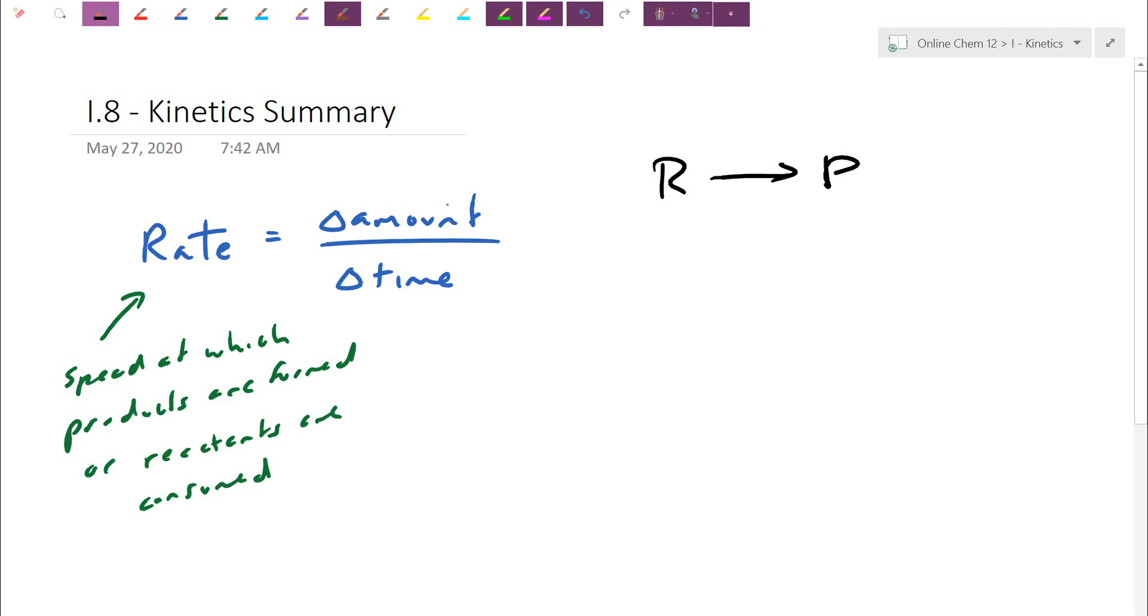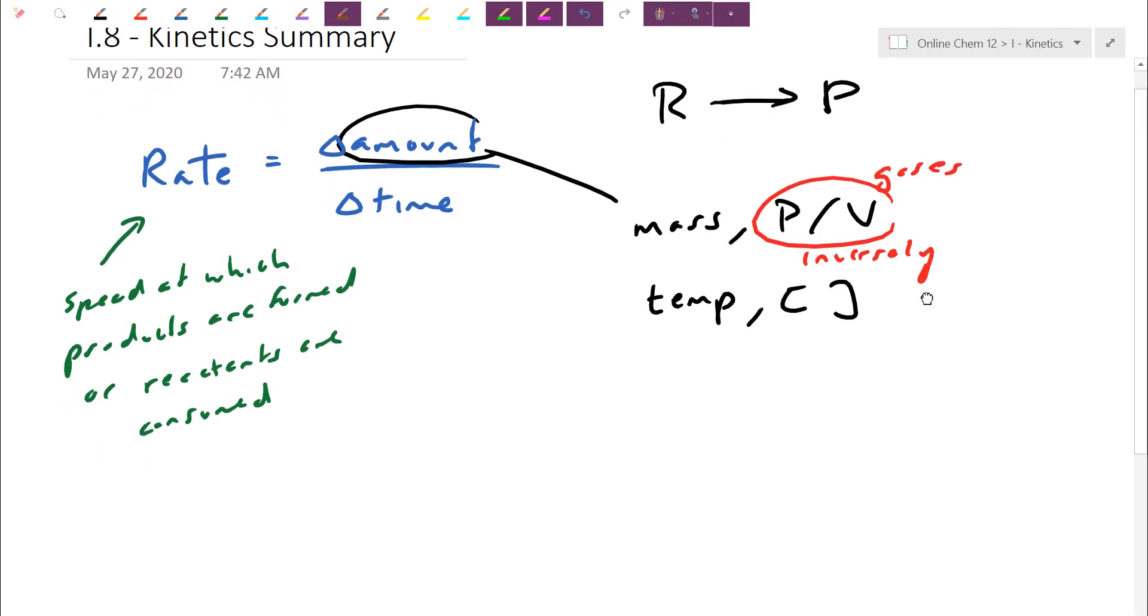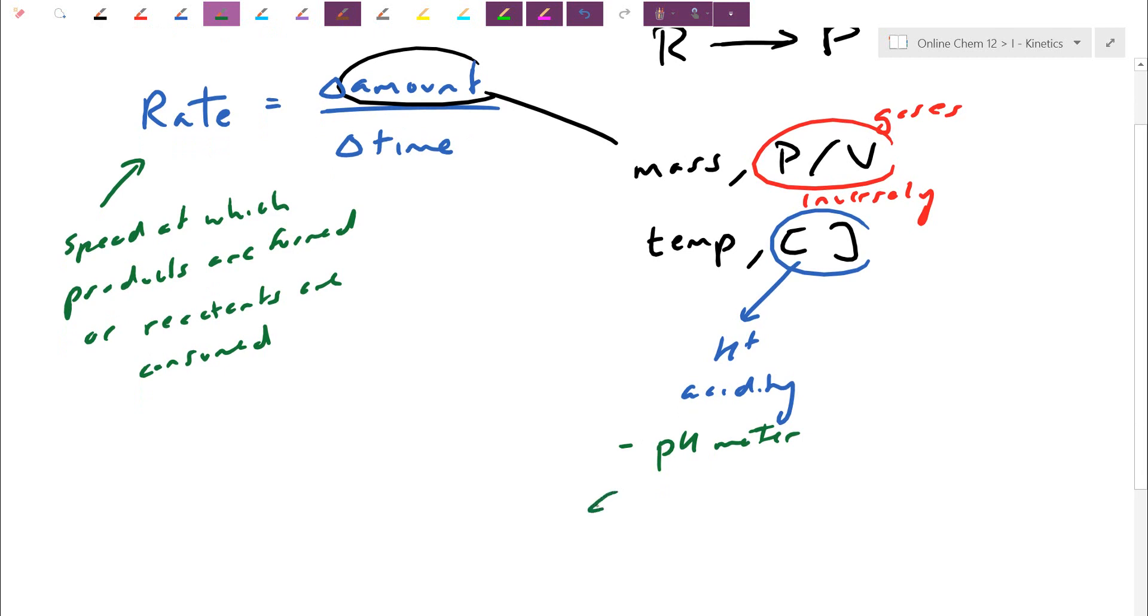For the amount here, we actually saw that we can measure a few different variables. We saw experiments where you can change mass, change pressure and volume. When you deal with pressure and volume, we're specifically looking at gases. These ones here are inversely related, so they're opposite each other. If you're getting confused about what this pressure means, think of it in terms of volume, but it's just the opposite. Especially if the reaction is endo or exothermic, we can track how quickly the temperature itself changes continuously.